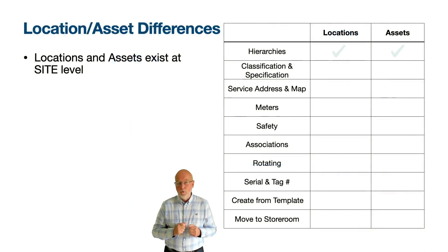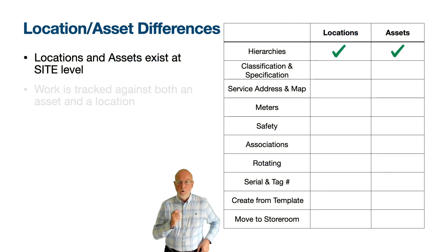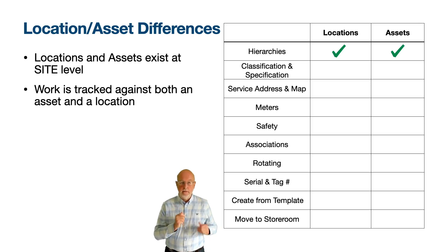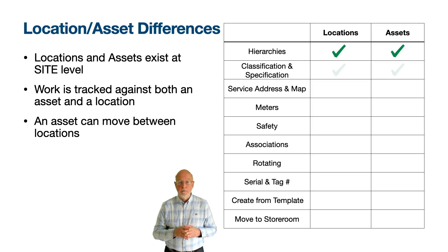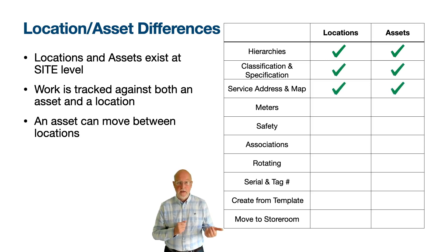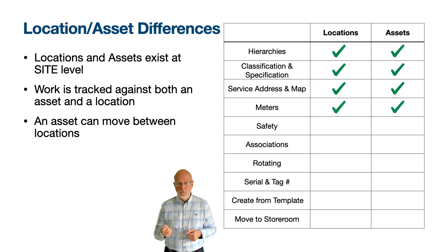Locations and assets both support hierarchies, although an asset can only belong to one hierarchy. Work order history is tracked against both the asset and the location; an asset can be moved between locations and its history goes with it. Locations and assets have a lot in common — they can both have a classification and a set of attributes associated with the classification, which we call a specification. They can both have a service address and be represented on a map when there are geographical coordinates.